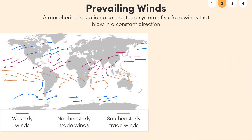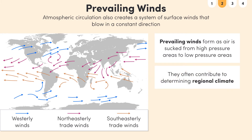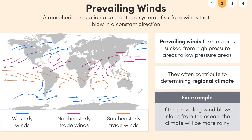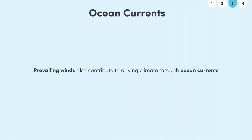Furthermore, atmospheric circulation creates a system of surface winds that blow in a constant direction. These prevailing winds form as air is sucked from high pressure areas to low pressure areas. Prevailing winds often play a role in determining regional climate. For example, if the prevailing wind blows inland from the ocean, the climate will be more rainy. Prevailing winds also play another role in driving climate: ocean currents.